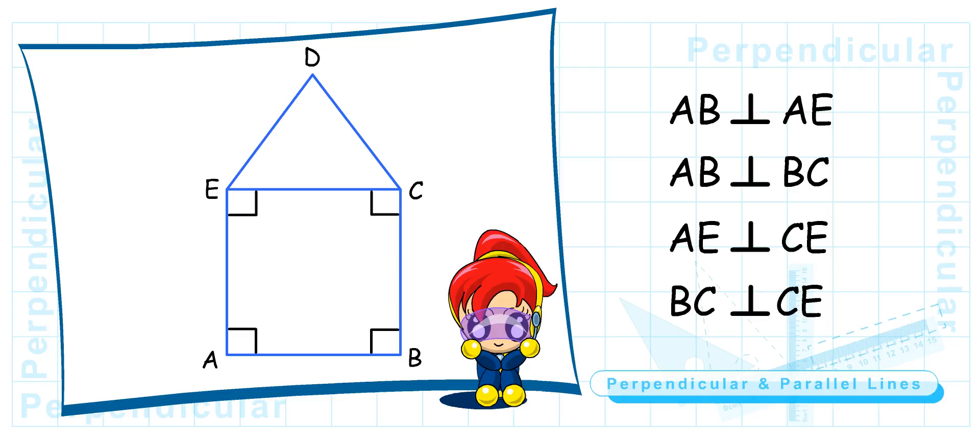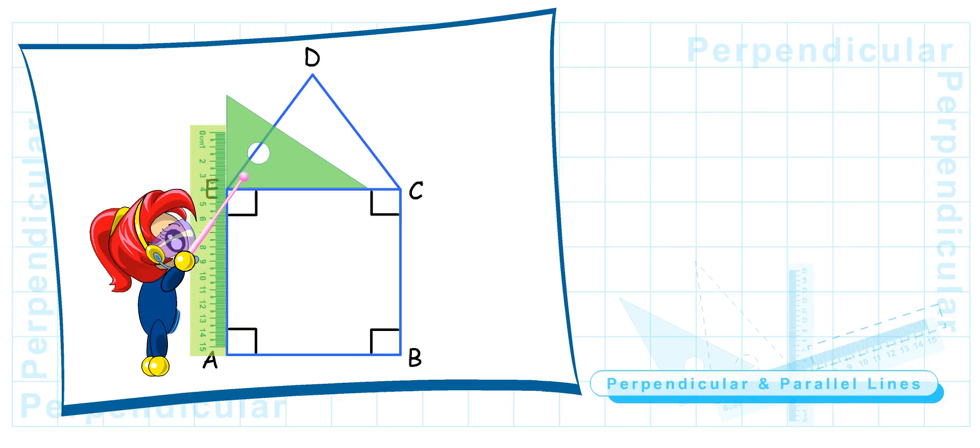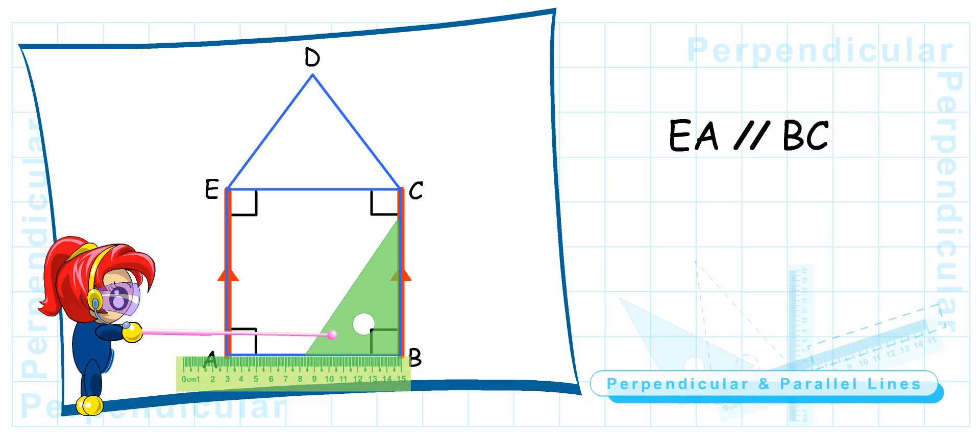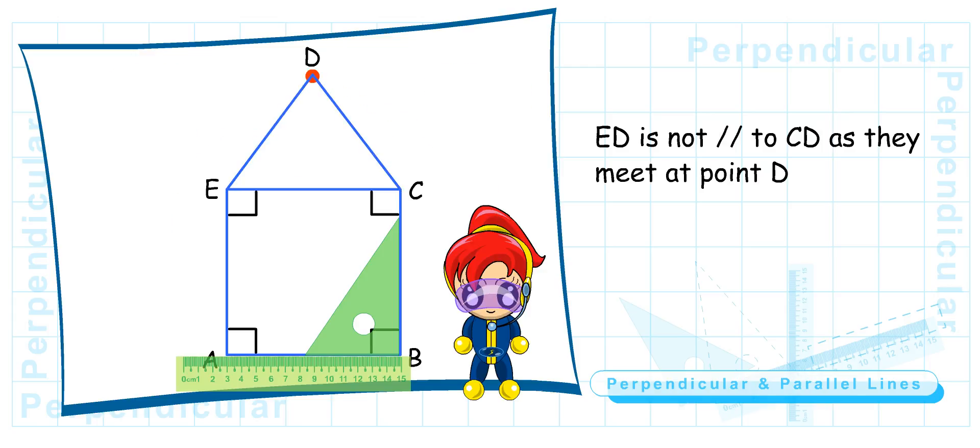Lastly, I want you to list out the parallel lines that are in the same picture. Okay, this time I need to use both the ruler and the set square. Now, line AB is parallel to CE. EA is parallel to BC. But ED is not parallel to CD as they meet at the point D. Very well done, Turbo Girl.